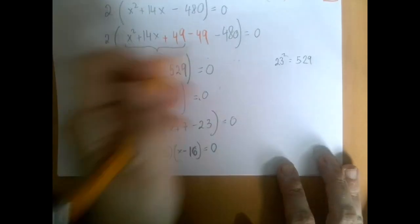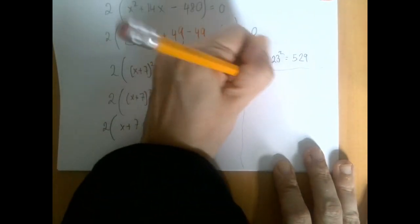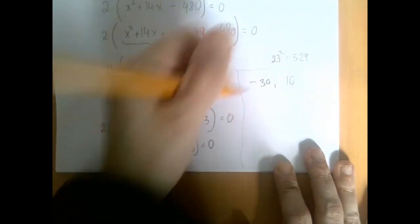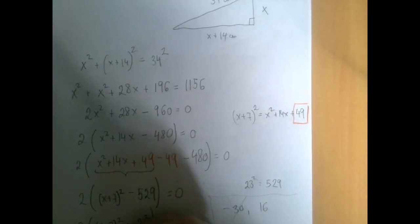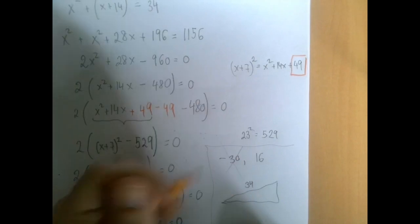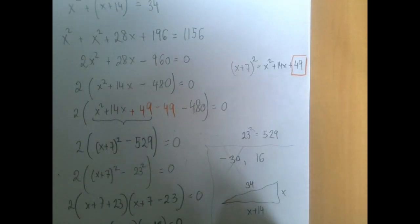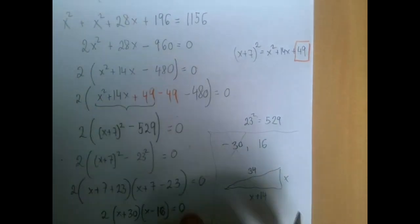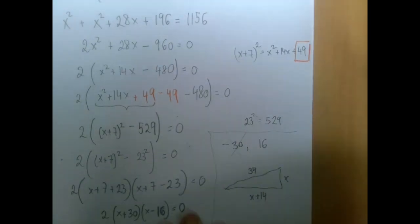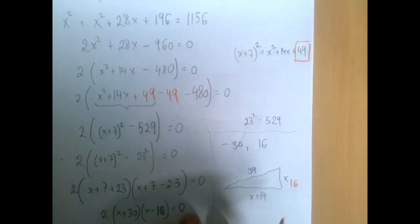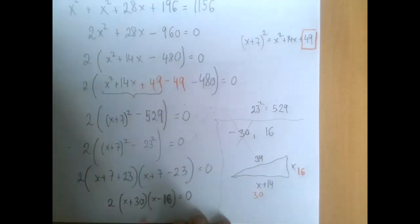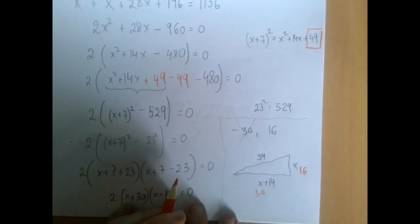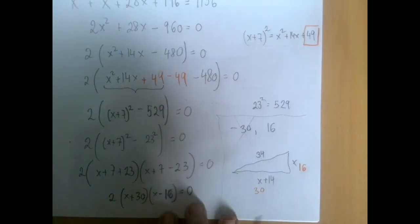So there are two possibilities: negative 30 and 16. Negative 30 is quickly ruled out because x represents a distance, so we run with the one solution. Given the hypotenuse was 34, and we labeled the other sides as x and x plus 14 — if x is 16, then the shortest side is 16, and 16 plus 14 is 30. So the missing sides are 16 and 30.